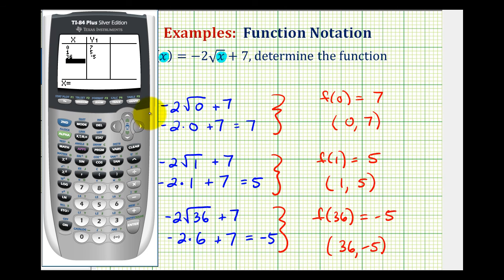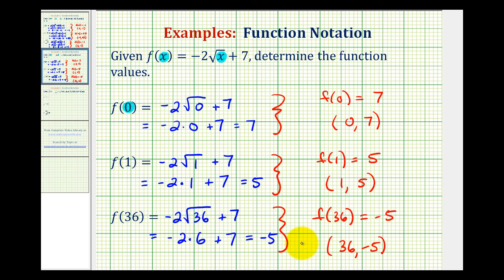And if we want to look at the graph of the function, we can just press graph. This way we can make the connection that f of 0 equals 7 represents a point on the function that would be this point right here with an x-coordinate of 0 and a y-coordinate of 7. f of 1 equals 5 would be the point here on the function. And then f of 36 equals negative 5 would be this point here, but it is off the screen. I hope you found this helpful.